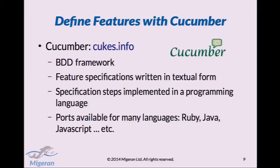This is where Cucumber comes in. Cucumber is a BDD, or Behavior Driven Development, framework. You can write feature specifications in a simple language — it's basically just a text file. In order to make this specification executable, we implement each step of the specification in a programming language in a separate file or module. The original version of Cucumber was built in Ruby, but ports are now available for many languages, including JVM languages like Java or Scala, and there are also JavaScript, C++, and Lua implementations — so you can use it in almost any major language.